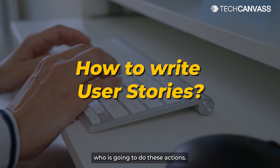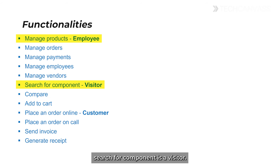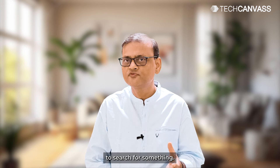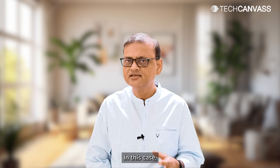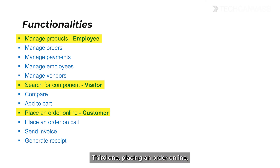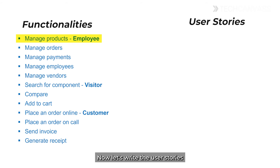The next step is to identify who is going to do these actions. Let's take three examples. First: manage products — this will be done by an employee. Second: search for component — this is a visitor; you don't need to be registered or a customer to search. This is a company selling auto parts online. Third: placing an order online — this is obviously done by a customer.